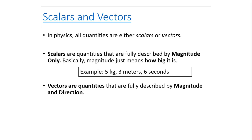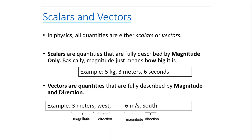Vectors, on the other hand, have two parts: magnitude and direction — how big it is and what direction it is pointing to. For example, 3 meters west: the magnitude is 3 meters and the direction is west. 6 meters per second south: 6 meters per second indicates the magnitude, how big the velocity is, and south is its direction.